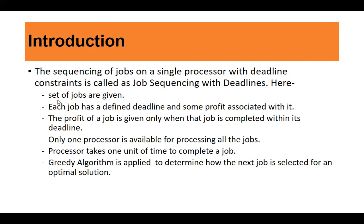You are given a set of jobs, each with a defined deadline and some profit. The profit is earned only when the job is completed within its deadline — if the deadline is one hour, the job must finish within one hour, otherwise no profit is earned. Only one processor is available, so you cannot run jobs in parallel; only one job can be carried out at a time. We assume the processor takes one unit of time to complete a job. We apply a greedy algorithm to determine how the next job is selected for an optimal solution, since we want to maximize profit — it's a maximization problem.